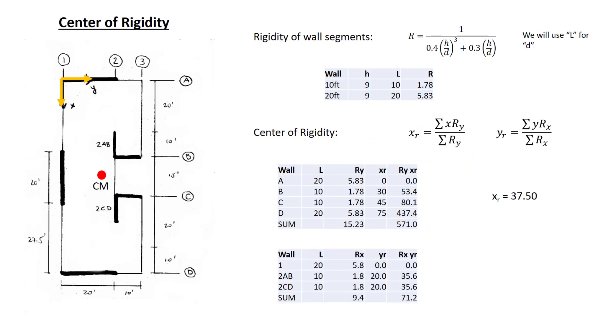Similarly, we can calculate the y coordinate of the center of rigidity. The relevant walls here are the ones that are oriented in the x direction, namely walls 1, 2AB, and 2CD. Again, I've listed the lengths solely to be able to identify which rigidity is relevant here. And we identify the location of these walls in the y direction.